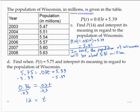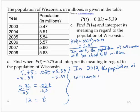So what is that telling us? In 2012, the population of Wisconsin will be about 5.75 million.